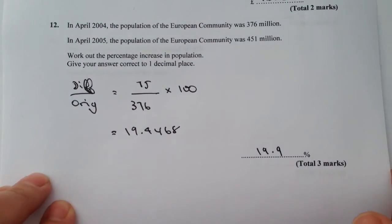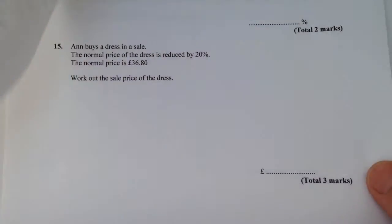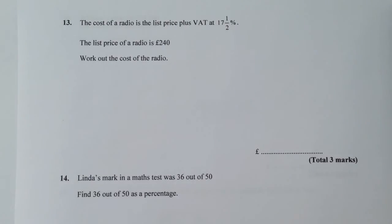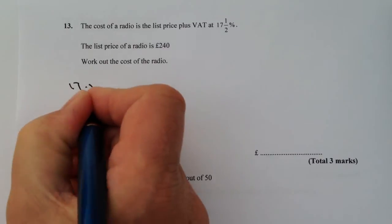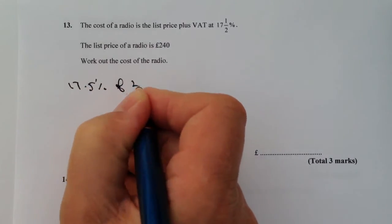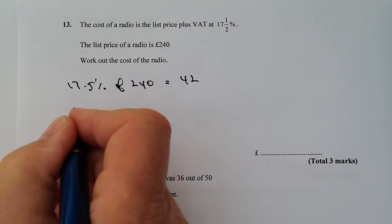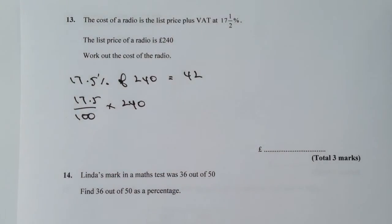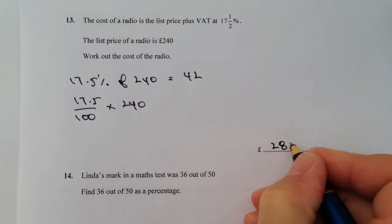On to the next question. Please do contact me directly if you need any help — I'd be happy to add more detail or produce another video. The cost of the radio has a list price of £240 and VAT at 17.5%. So 17.5% of 240 equals 42 — that's the same as putting 17.5 out of 100 multiplied by 240 into the calculator. Therefore the total cost of the radio is the VAT of £42 added to the original cost of £240, giving a total of £282.